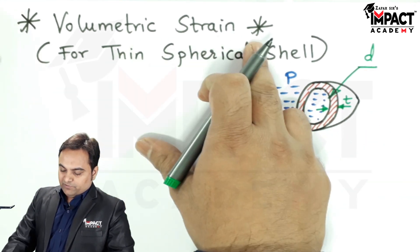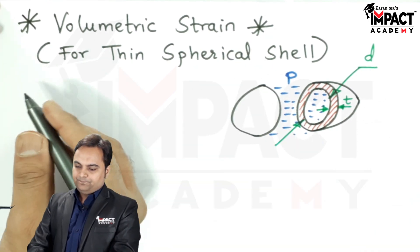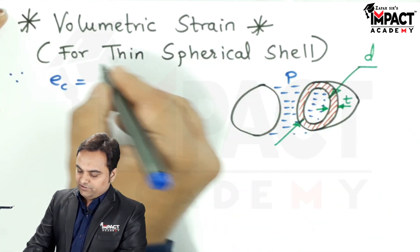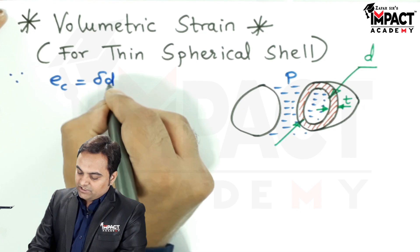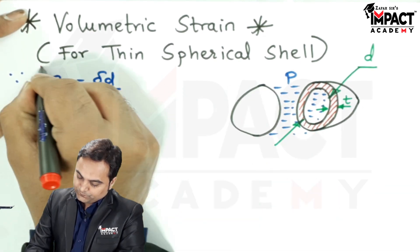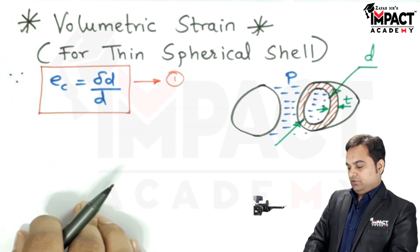Now, to get the volumetric strain, first I will say that since the circumferential strain is given by the general formula: change in diameter upon original diameter, keeping it as equation first.